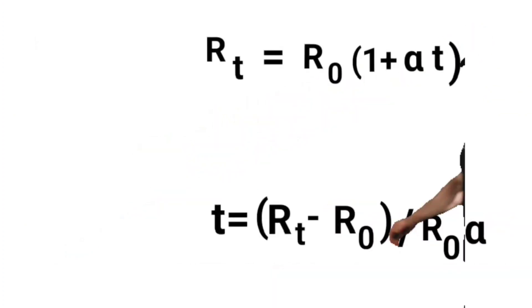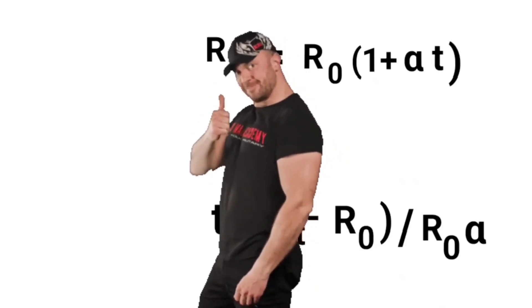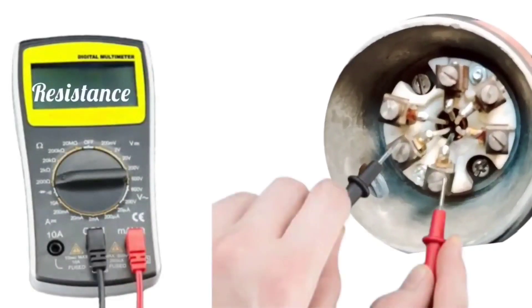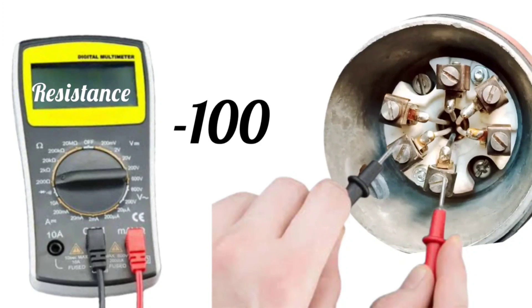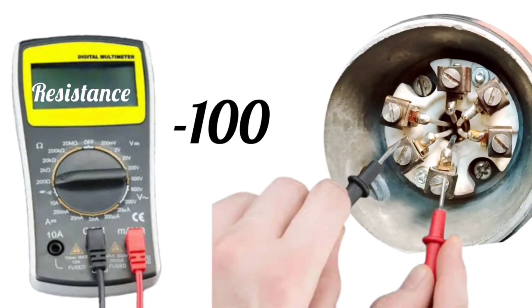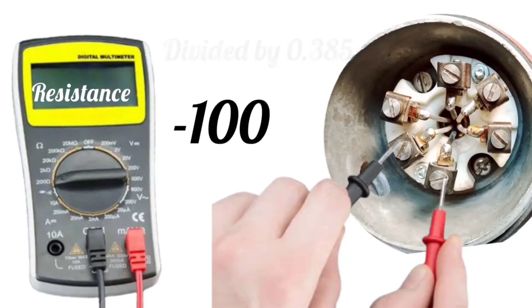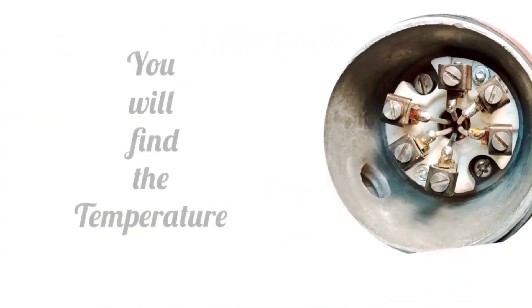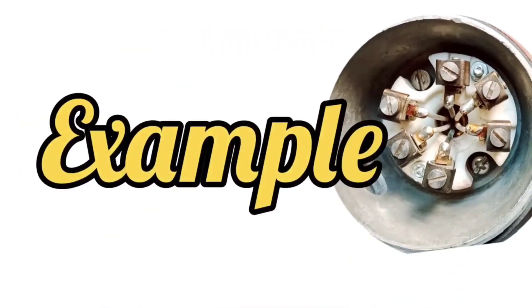Let us now understand the formula in easy language. There is no need to memorize long and elaborate formulas. As much resistance is being shown in the multimeter, minus 100 has to be done, and that has to be divided by 0.385 or multiply by 2.6. You will find the temperature. Let's understand this with an example.